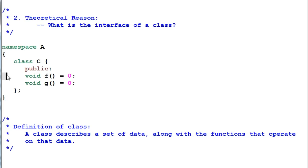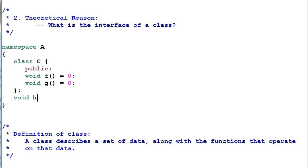Apparently, all the public functions that are defined inside C are part of the interface of C. However, if I have another function called void h which operates on C, does function h belong to the interface of C?